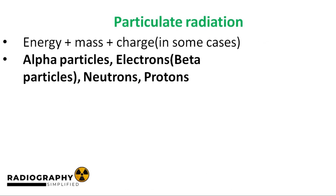Now we talk about particulate radiation. Unlike electromagnetic radiation which carries only energy, particulate radiation is energy, mass, and sometimes charge in motion. Examples of particulate radiation include alpha particles, electrons, and beta particles, which are a type of electron. Other types of particulate radiation are neutrons and protons. Now we explore some of these particles individually.